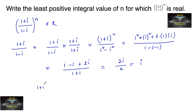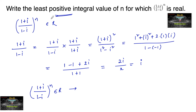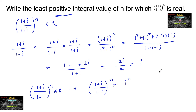So now (1 plus i) upon (1 minus i) whole power n is a real number. What is the least positive integral value of n for which it is a real number? So (1 plus i) upon (1 minus i) whole power n is equal to i to the power of n.